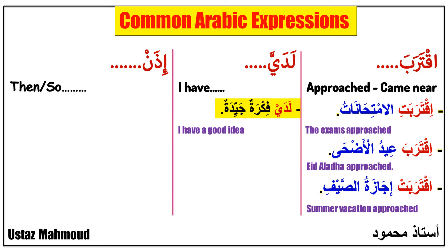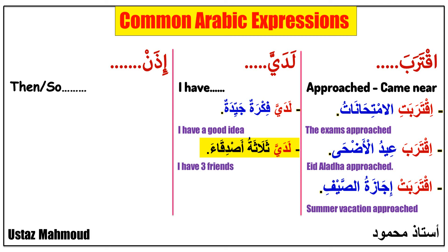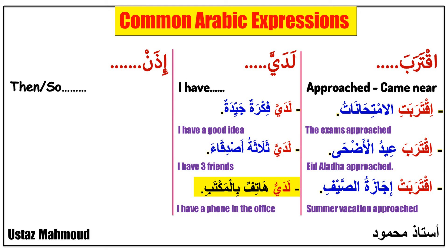Next sentence: 'Ladayya thalatha asdiqa' — it means 'I have three friends.' 'Ladayya' means 'I have,' 'thalatha' means 'three,' 'asdiqa' means 'friends.' Next phrase: 'Ladayya hatif bil-maktab' — it means 'I have a phone in the office.' 'Hatif' means 'a phone,' 'bil-maktab' means 'in the office.'